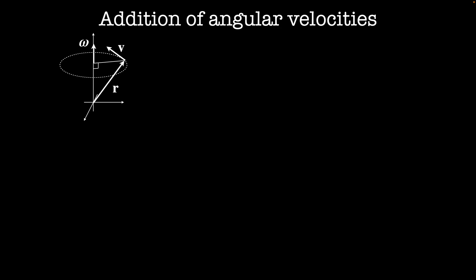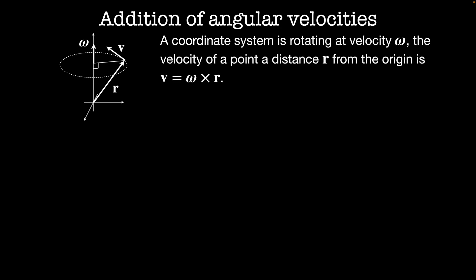It turns out in the future we're going to find that using a coordinate system that's actually stuck to the rotating body makes some calculations easier. If our coordinate system is rotating at angular velocity omega, so that's this vector here, the velocity of a point that's a distance r from the origin is given by v equals omega cross r.